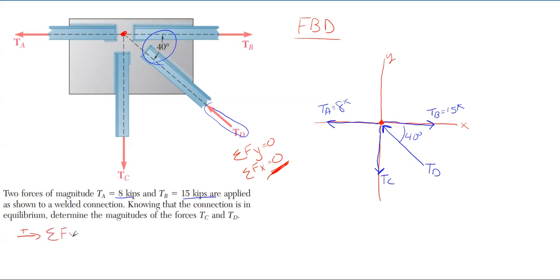I'm going to sum forces in the x direction to be 0, and I'm going to take everything to the right as a positive value in this equation. Everything going to the left will be a negative value. So let's get TA, which is 8 kips. It is pointed to the left, so that is negative based upon my sign convention. And then we have TB, which is 15 kips pointed to the right, positive. And then I have TD. TD is at an angle of 40 degrees off of the x, so it will have components in both the x and y direction.